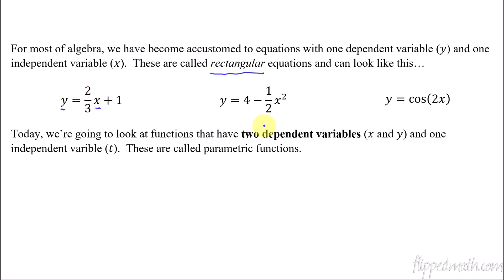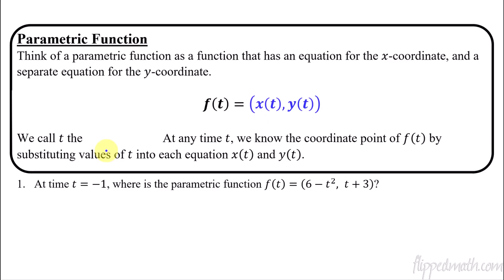Today we're going to look at parametric functions, which have two dependent variables. So instead of just a y as the dependent variable, we'll have an x and a y that are both dependent. Often it's x and y, and then the one independent variable we'll call t. So the function will be f of t equals, and then you have an equation for the x coordinate and a separate equation for the y coordinate. The t is the independent variable, and we refer to it as the parameter — t is the parameter, the thing that gets plugged in.